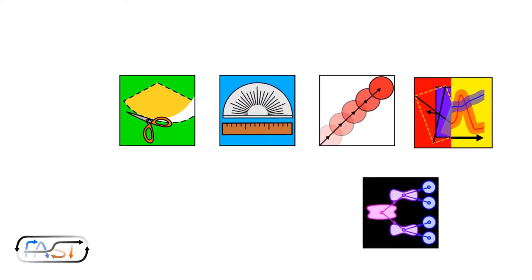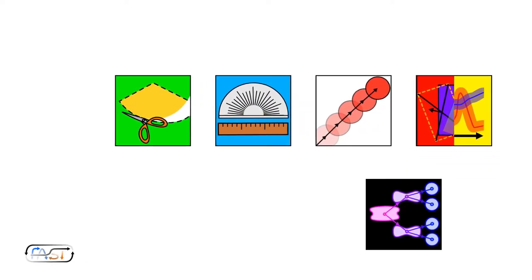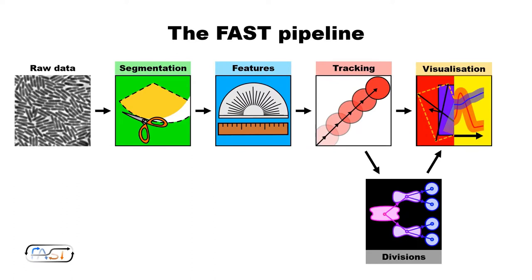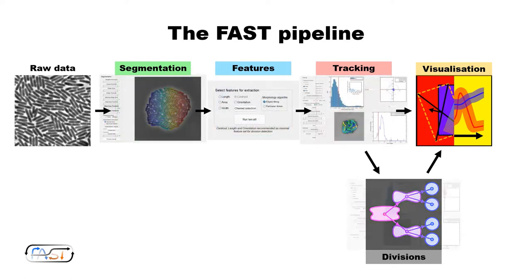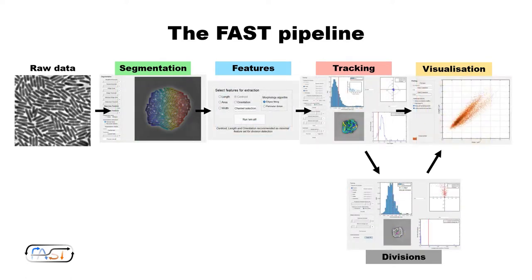Our pipeline is split into six different modules. Data is analyzed in the segmentation, feature detection, tracking, and division assignment modules, and the results visualized with the overlays and plotting tools. Each module is presented in a separate graphical user interface, designed to provide rapid and useful feedback to help the user perform that stage of the analysis.